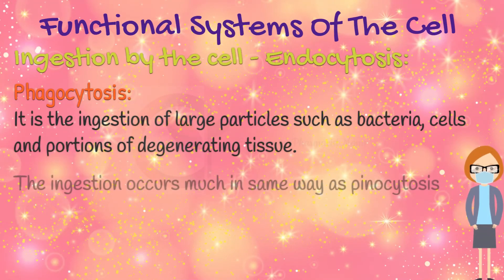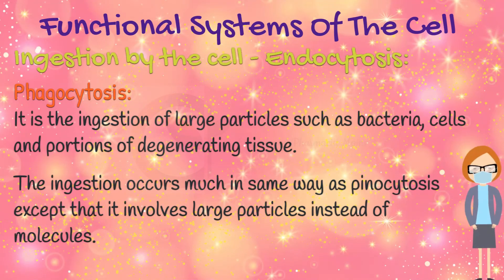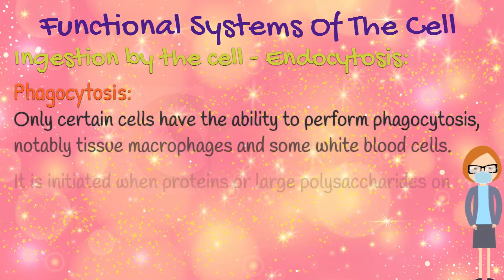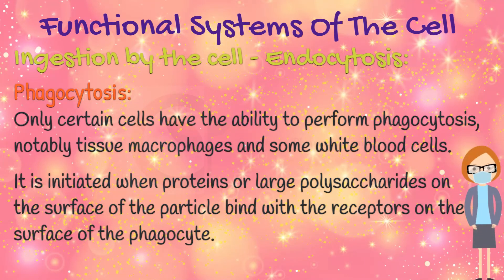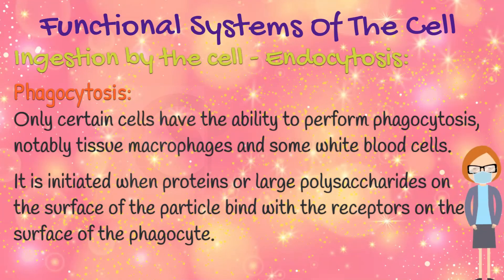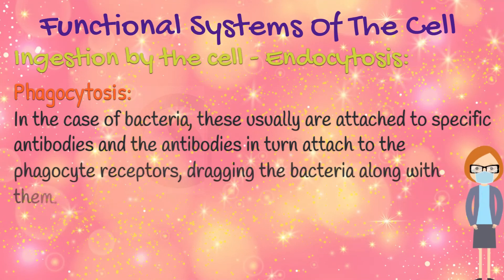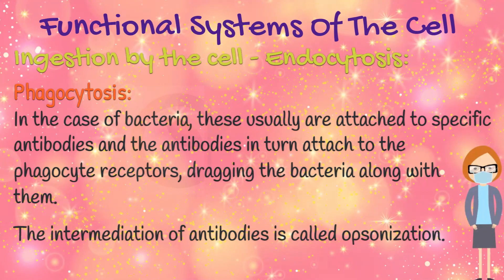Phagocytosis is the ingestion of large particles such as bacteria, cells, and portions of degenerating tissue. The ingestion occurs in much the same way as pinocytosis, except that it involves large particles instead of molecules. Only certain cells have the ability to perform phagocytosis, notably tissue macrophages and some white blood cells. Phagocytosis is initiated when proteins or large polysaccharides on the surface of the particle bind with receptors on the surface of the phagocyte. In the case of bacteria, these are usually attached to specific antibodies, which in turn attach to the phagocyte receptors, dragging the bacteria along with them. This intermediation of antibodies is called opsonization.